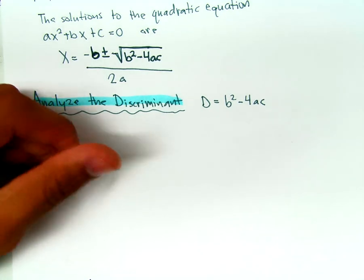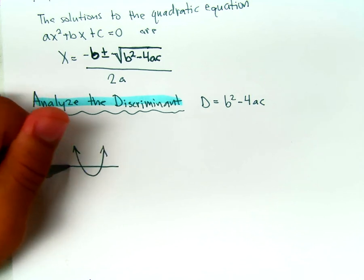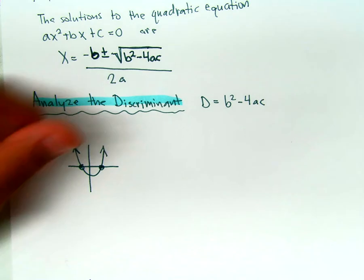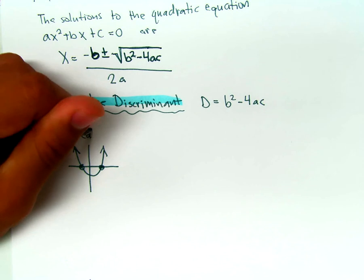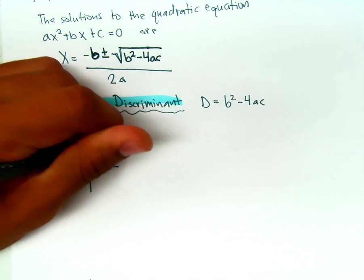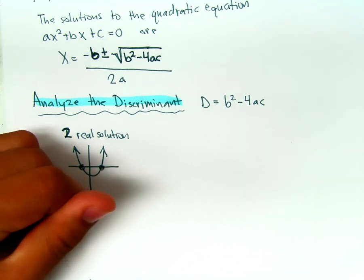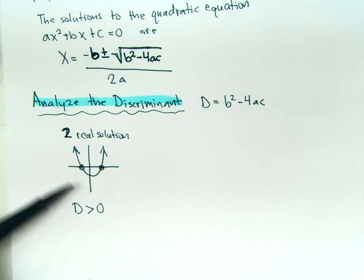When working with quadratics, we have three possible cases. The first case is two real solutions. We can know right off the bat whether we have two real solutions if the discriminant is greater than zero. So if we solve b squared minus 4ac and that value is greater than zero, we'll know that we have two real solutions, or two zeros.